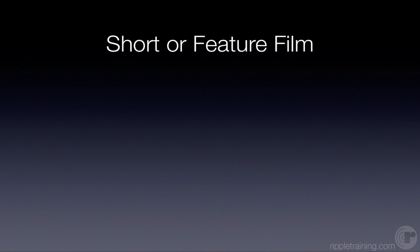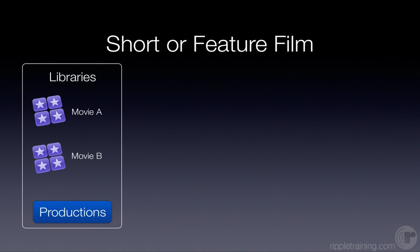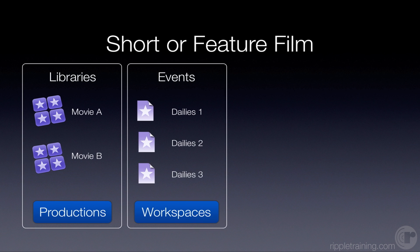What I want to do now is take a quick look at some scenarios — some examples of how you might use this new library workflow or these production units. For example, you might be working on a short film or a feature film. You might set up a single library for one movie and another library for another movie. Within those libraries, you'll have separate events that you'll want to label as dailies — little containers within each library that contain the various dailies for each of your movies.